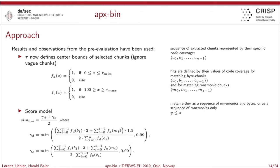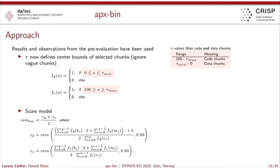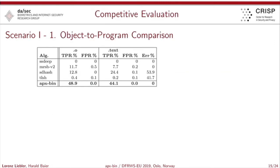We finally defined an approach. The most important part is again the parameterization of the thresholds. We defined center bounds, meaning we only depict very reliably classified code fragment chunks, or only chunks very sure to relate to data fragments. With the values of tau_max and tau_min, we can define the code quality or chunk quality. If we set tau_max or tau_min to 50, we would select all chunks.